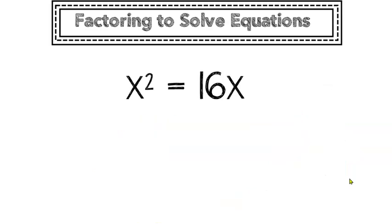In this example, when I start, my equation is not actually equal to 0. Therefore, I can't factor or rename it yet because the 0 product rule wouldn't apply.